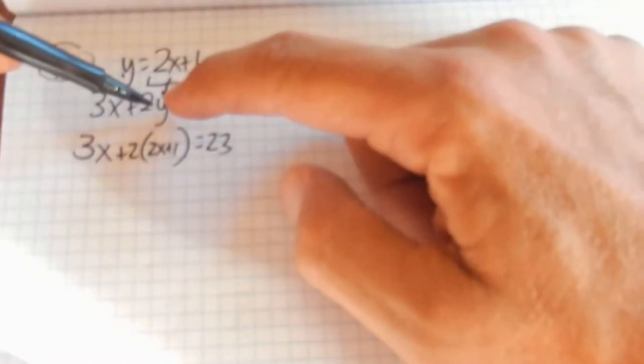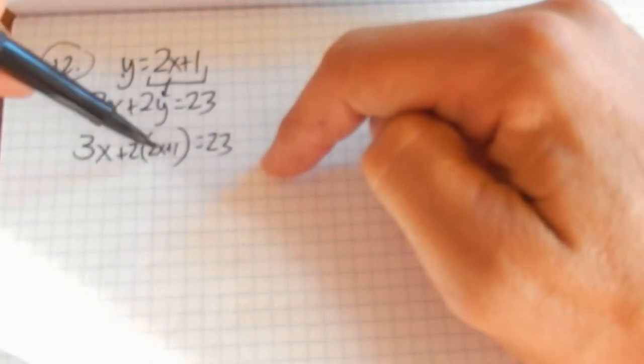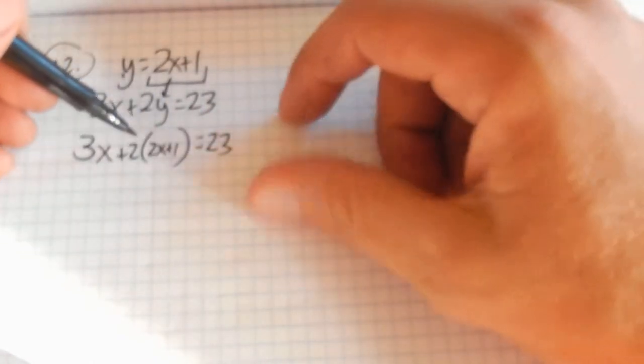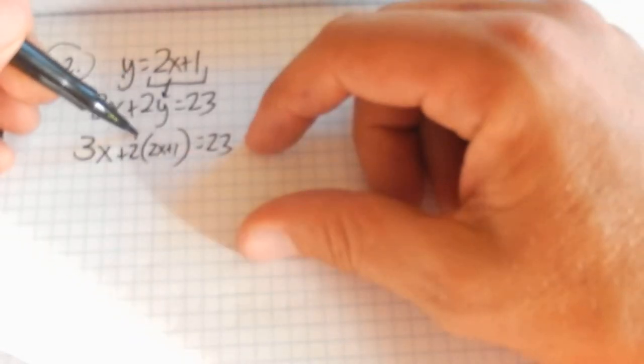And notice that when I do this, I now have an equation that only has a single variable in it. It's much easier to solve. It's possible to solve for a numeric answer.